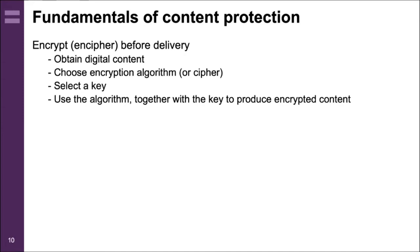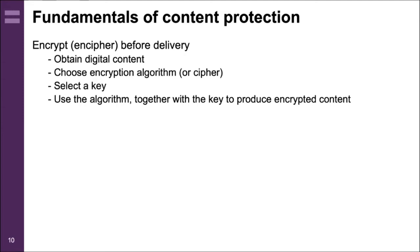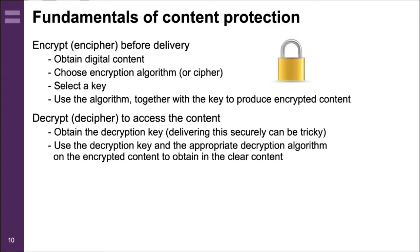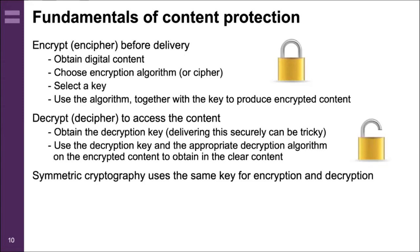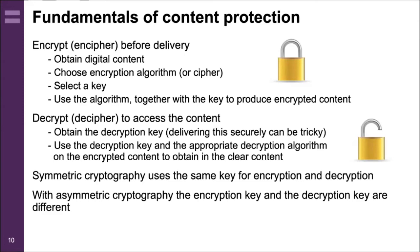The fundamentals of what we need to do: first, we've got to encrypt — or encipher or scramble, to use the old analog term — the content before delivery. We get the digital content, choose an encryption algorithm, select a key, and using that algorithm together with the key, we encrypt the content. To allow the viewer to watch it, we need to decrypt it, which requires getting the decryption key to the set-top box securely — one of the major issues CA systems have to tackle. Symmetric cryptography uses the same key for encryption and decryption; with asymmetric cryptography, the encryption key and decryption key are different.